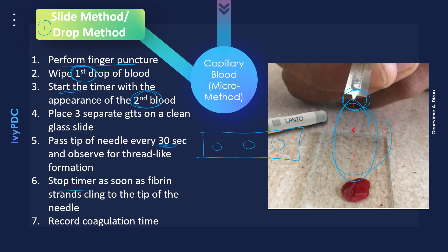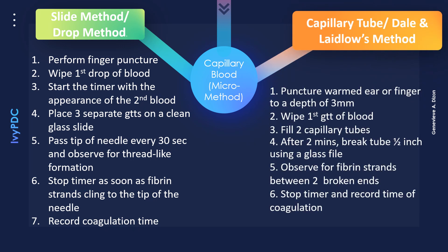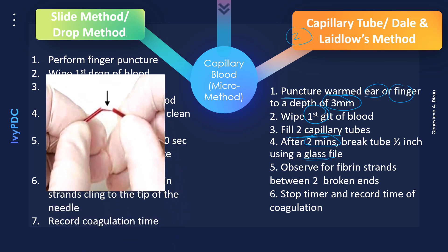Once a thread-like structure is seen, stop the timer and record the coagulation time. The next method is the capillary tube or Dale and Laidlowe's method. Warm the puncture site of the ear or finger first before puncturing to a depth of three millimeters. Wipe the first drop of blood and fill two capillary tubes. After two minutes, break the tube using a glass file and observe for clot formation.